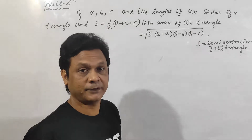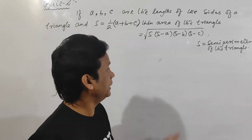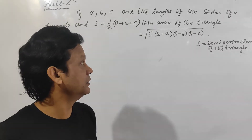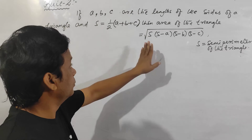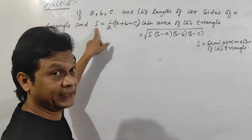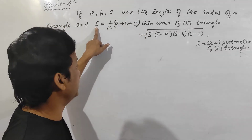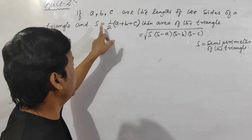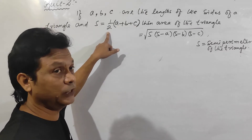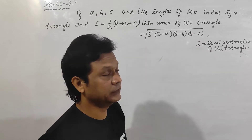This is Hero's formula — also known as Heron's formula. The condition is: first of all you want to find out s, and s is the semi-perimeter of the triangle, that means sum of the three sides divided by 2. You will get s, then apply the formula.